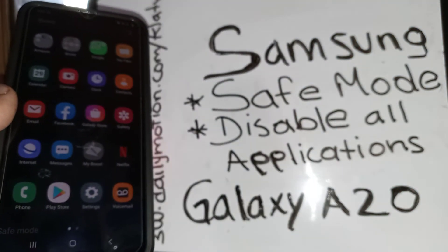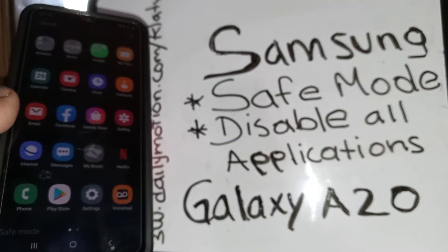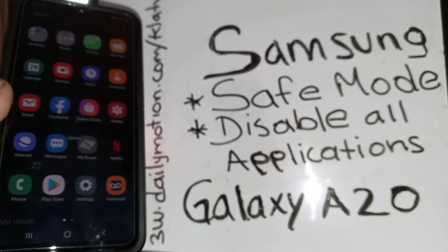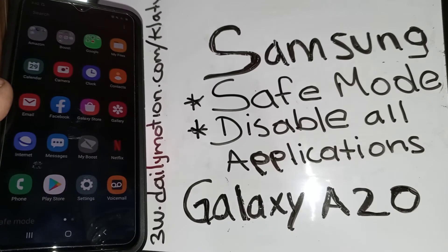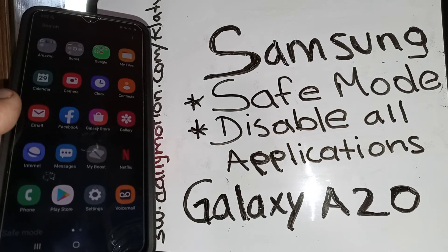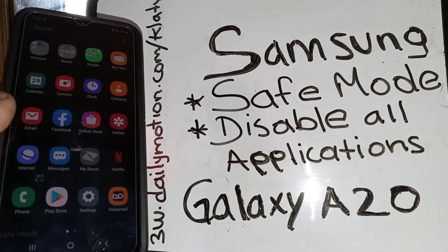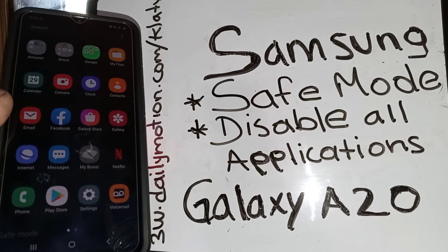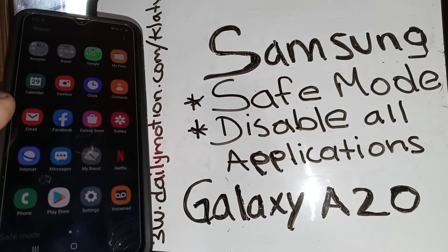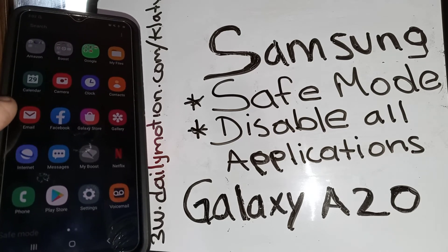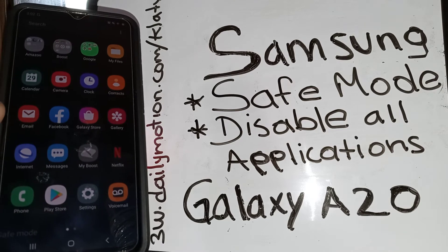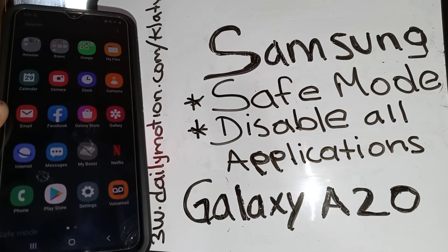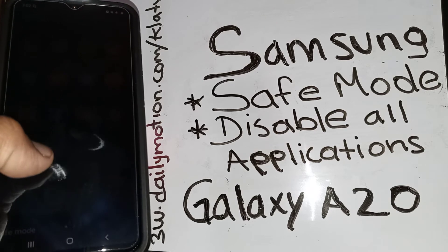That's how to enter safe mode on the Samsung Galaxy A20. To exit safe mode, simply power off or reboot the phone and you're ready to go. Note that some other phones may require different procedures — this tutorial is specifically for the Samsung Galaxy A20.